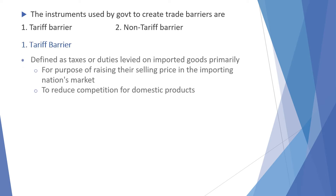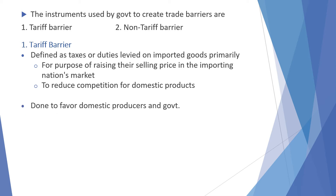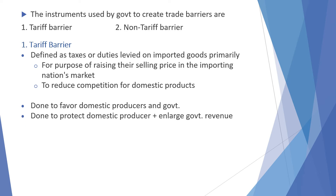The instruments used by the government to create trade barriers are tariff and non-tariff barriers. A tariff barrier is defined as a tax or duty levied on imported goods, primarily for the purpose of raising their selling price in the importing national market to reduce competition for domestic products. It is done to favor domestic producers and the government — to protect the domestic producer and also to enlarge government revenue. There are two types: import duties and official prices.